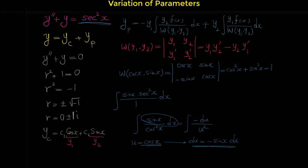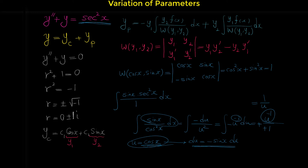With the substitution, cosine squared becomes u squared in the denominator. We bring u squared to the numerator as u to the negative 2, and use the power rule. The integral equals negative times u to the negative 1 over negative 1, and the two negatives cancel, giving 1 over u. Since u is cosine x, this integral equals 1 over cosine x.